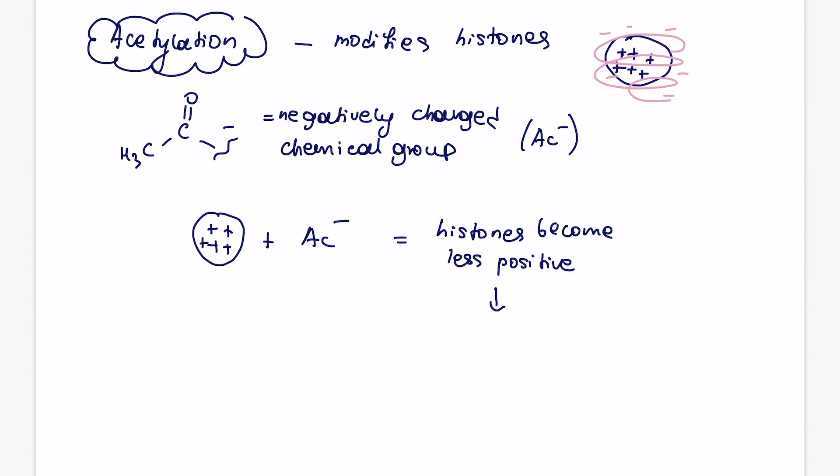Please do not say more negative, because histones are positively charged, so the more correct way to say that is less positive. And basically, what happens is, if suddenly histones are going to be less positive, then it means that the DNA will be less wrapped around the histones, less condensed, and therefore DNA becomes more accessible. If it's more accessible, that RNA polymerase can come and bind to it, and the rate of transcription will increase.